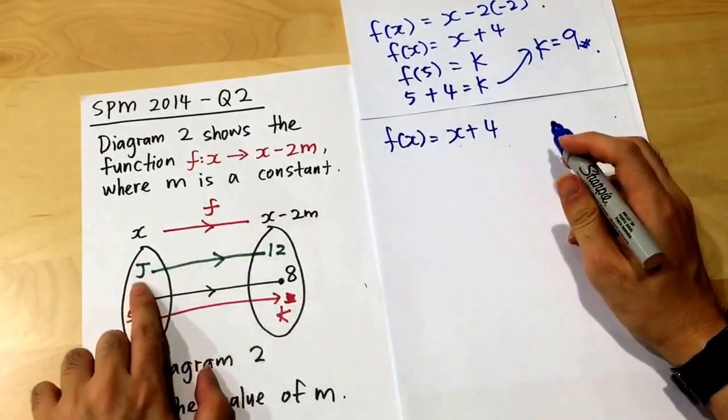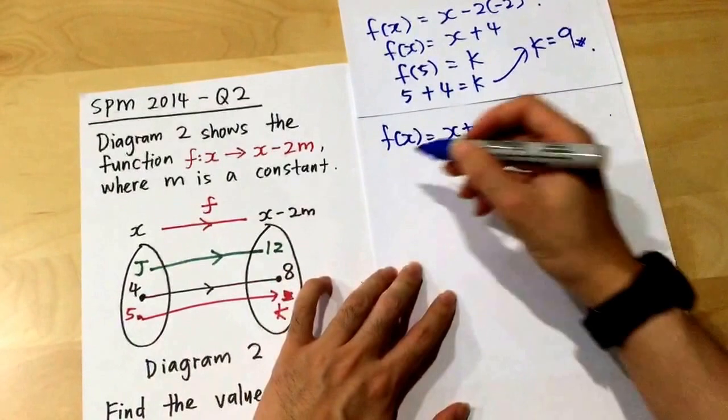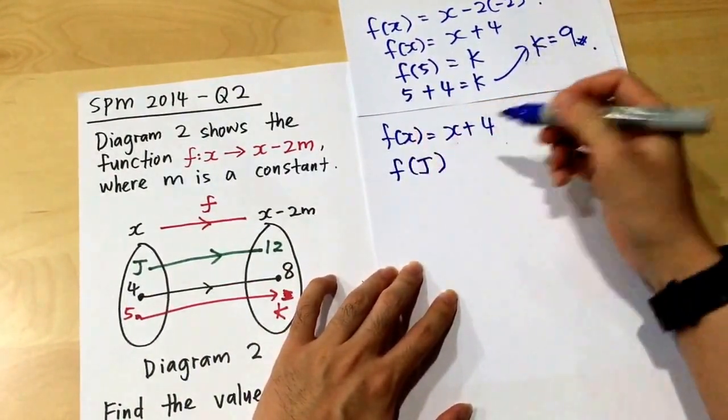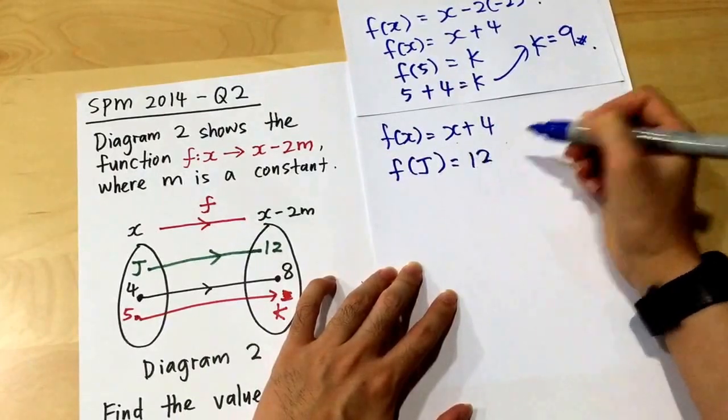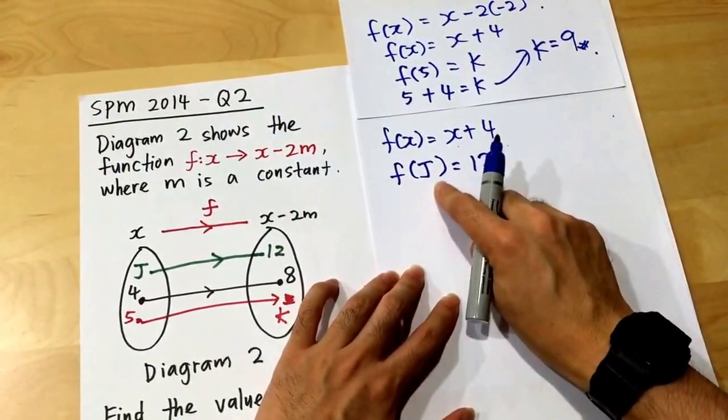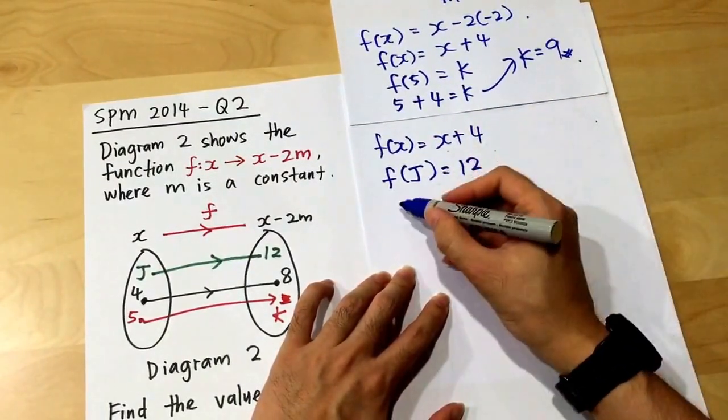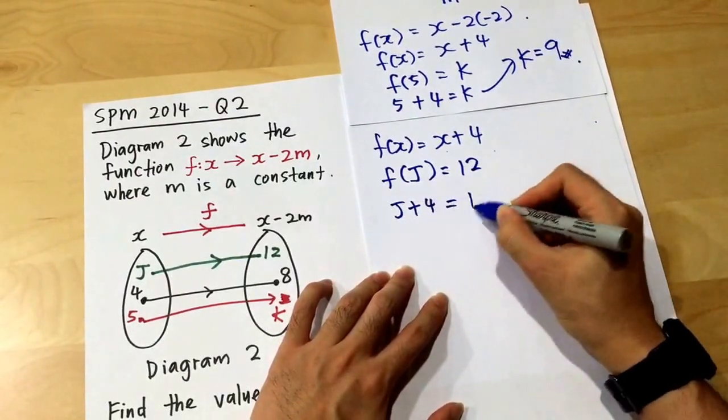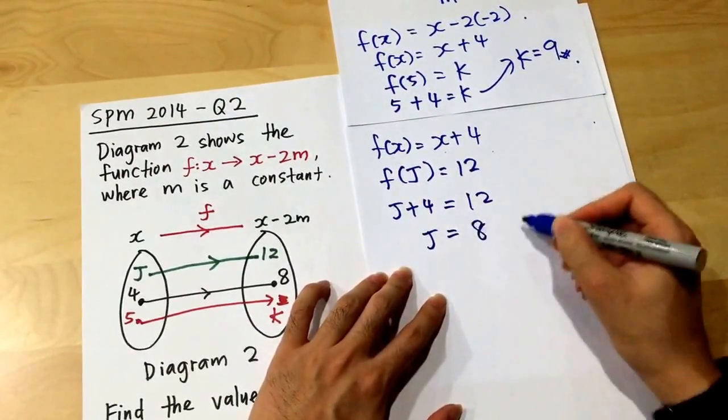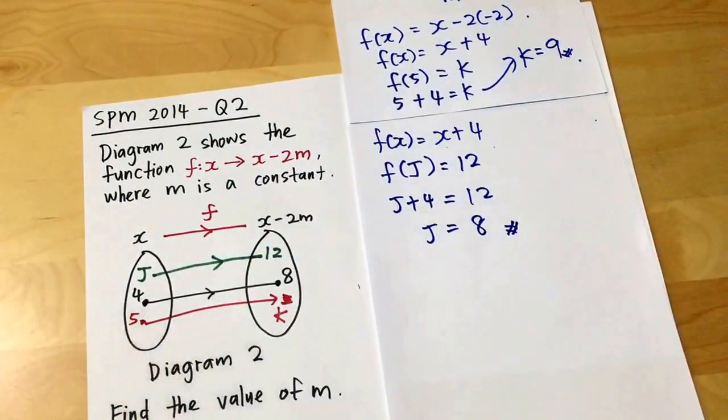Now, my x changed to j. The whole thing will give me 12. I will write f(j). My x now changed to j, I will get 12. What is my f(j)? f(j) means everything x here will change into j. So it will be j plus 4 equals 12. My j equals 8. This is how we read the diagram.